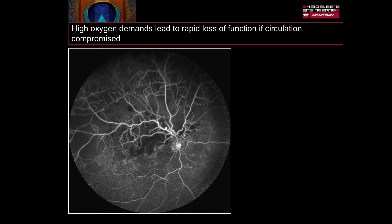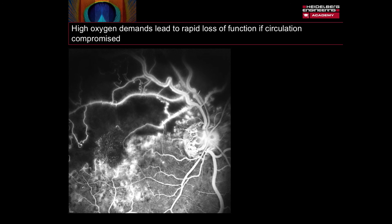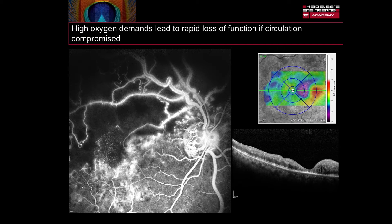The same changes can be observed in venous occlusion. Here we have a patient with a hemisphere vein occlusion and the ischemic retina can clearly be identified in the ultra-wide field fluorescein image. The high magnification fluorescein angiogram again confirms the presence of macular ischemia and interruption to the foveal arcade. The OCT thickness map and OCT B-scan confirm the presence of macular atrophy, which is associated with the capillary nonperfusion.